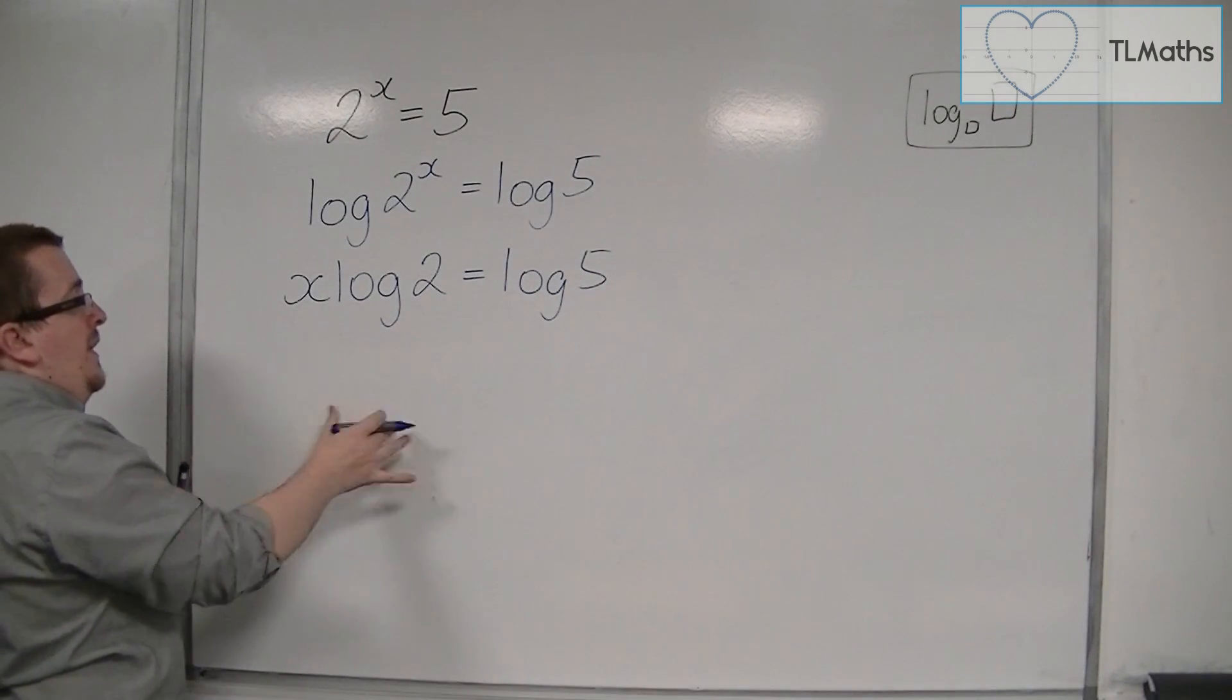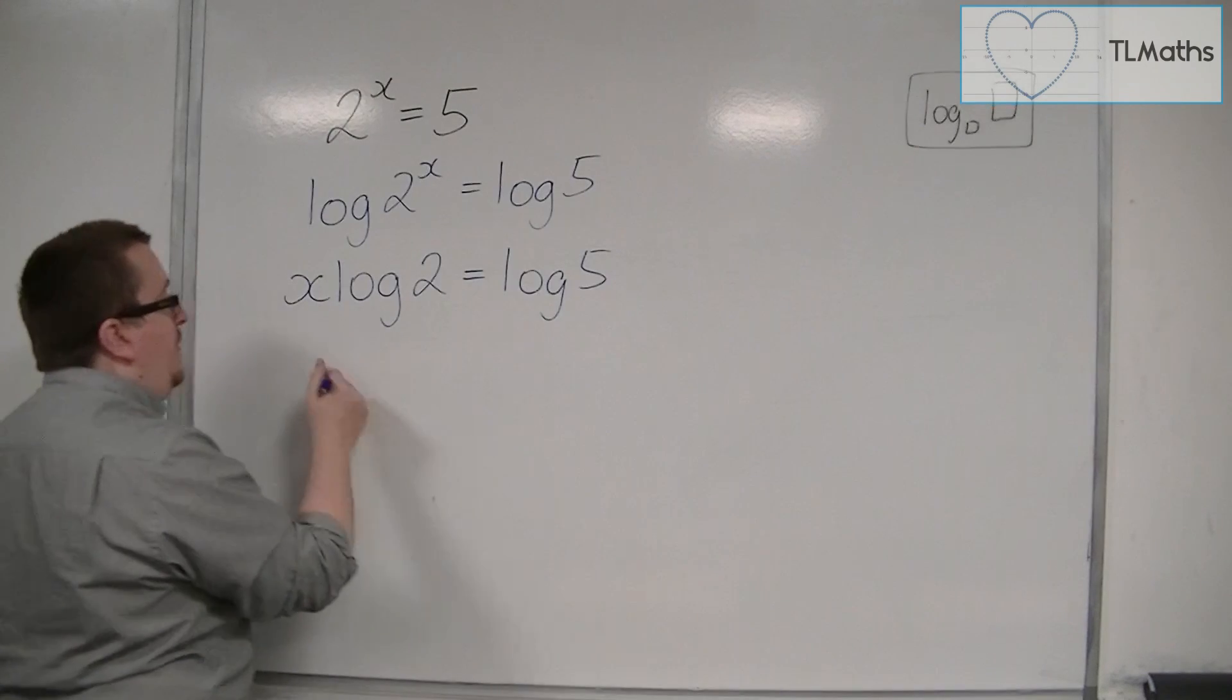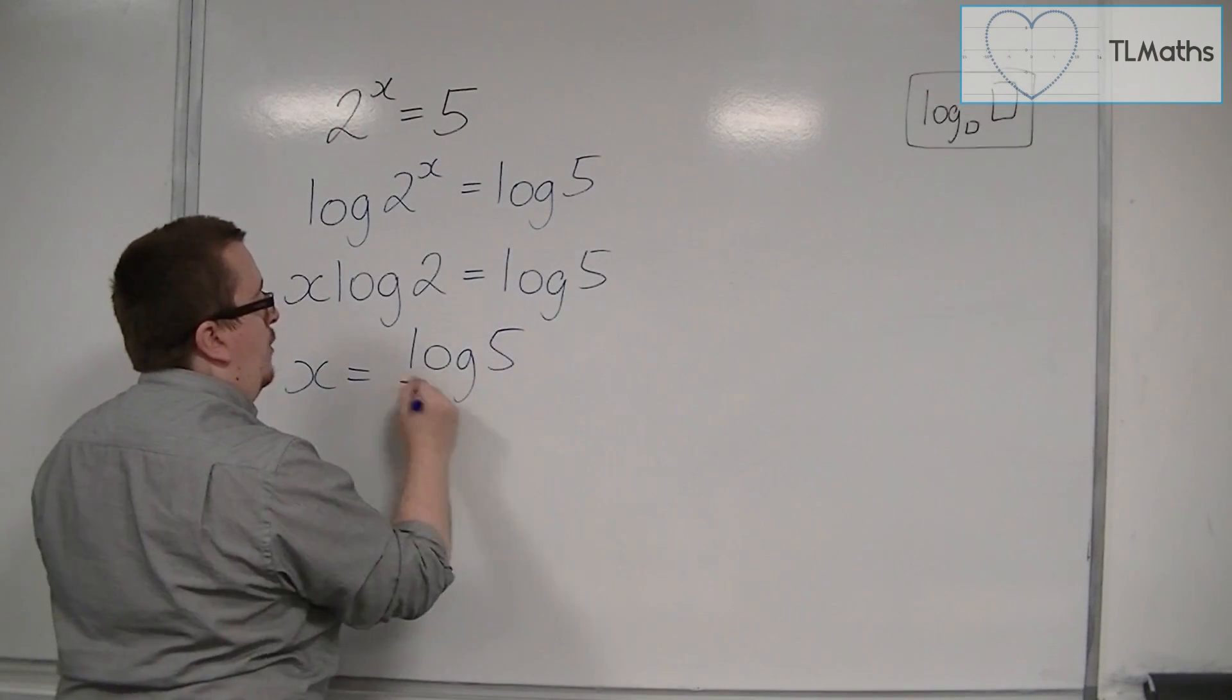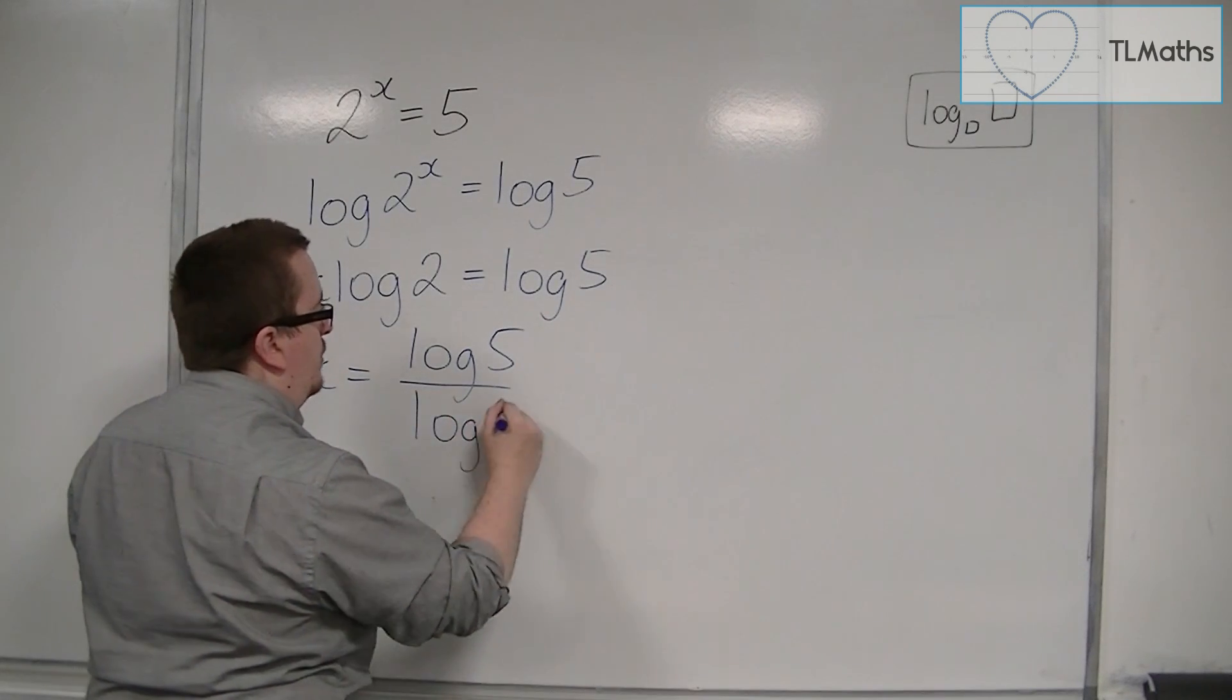And then, once we're there, we can divide both sides by that log 2. So x equals log of 5 divided by log of 2.